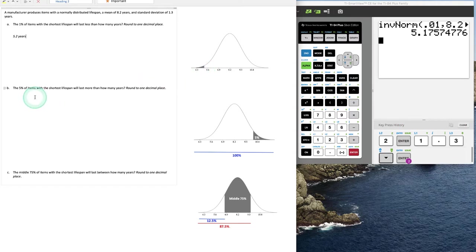The next example states that the 5% of items that will last more than how many years. So more than would be shading to the right and 5%. The only way we're going to get 5% area shading to the right is knowing that it's going to be the right tail. Unfortunately, this calculator does not give area to the right.